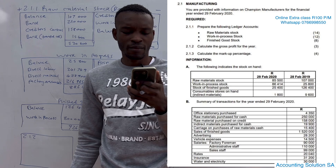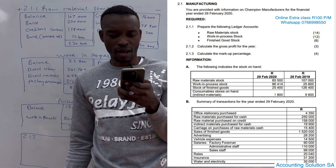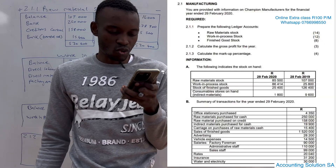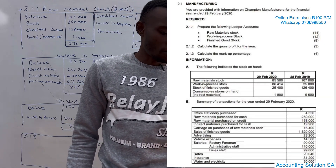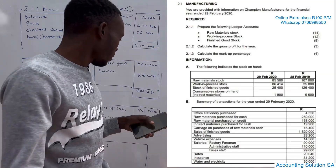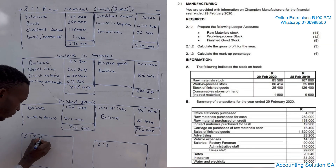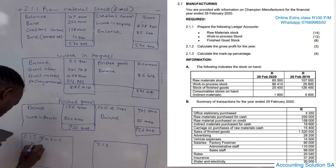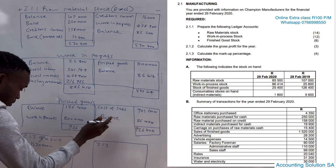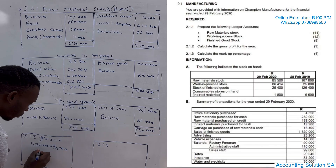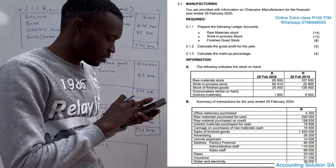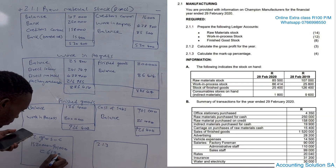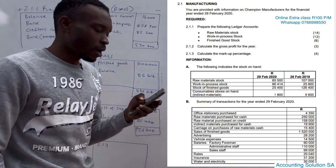Moving to the next one: calculate the gross profit for the year and complete the markup. Gross profit - under information number B we have sales of finished goods of 1,520,000. That's where we can calculate gross profit because we have sales. The formula is: gross profit equals sales minus cost of sales. Our sales amount is 1,520,000 minus cost of sales. Make sure your accounts are correct so you get the correct cost of sales. It's going to give you 619,000.